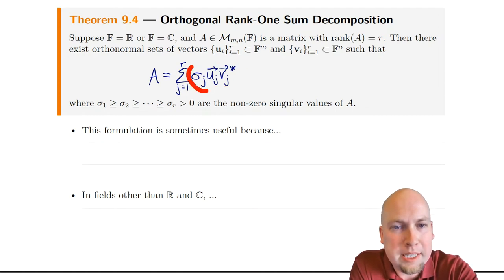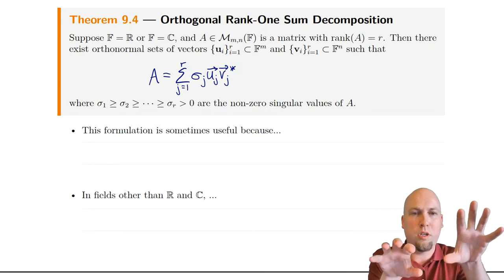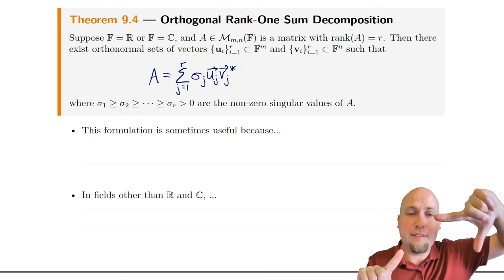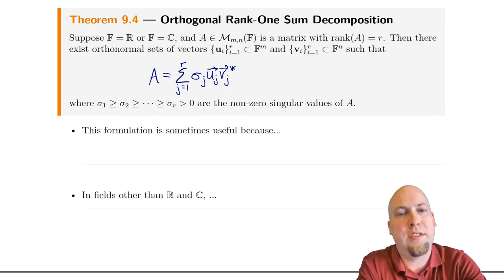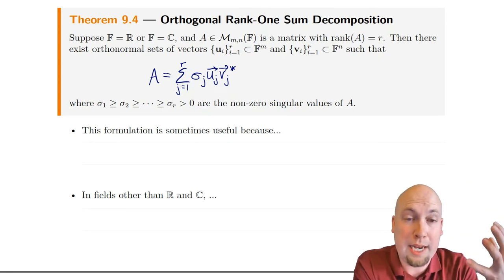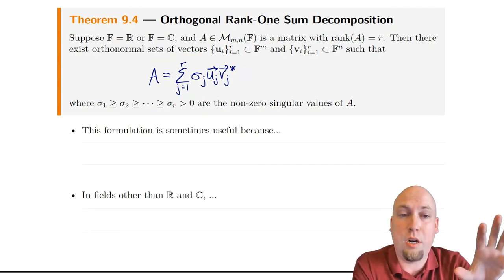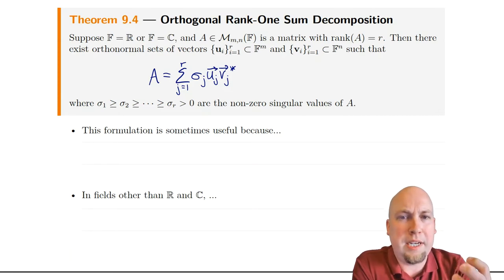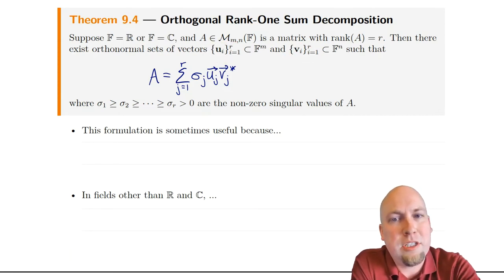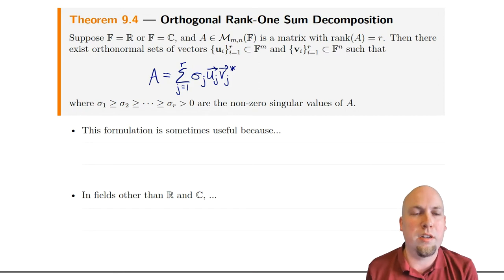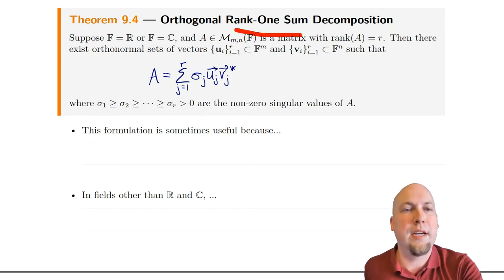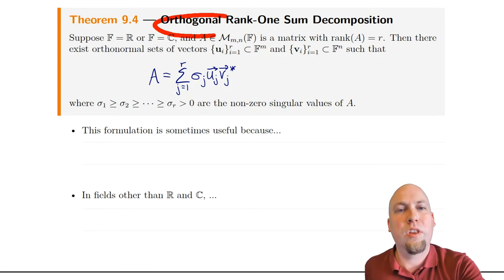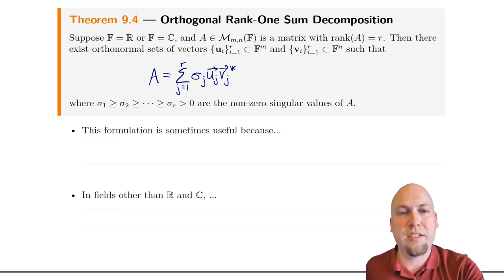These matrices — this is a scalar, this is a column vector, and this is a row vector. Whenever you have a column vector times a row vector, that gives you a matrix, and in particular a rank-1 matrix. So this is a scalar multiple of a rank-1 matrix, which is still rank 1. I've written A as a sum of R rank-1 matrices. Furthermore, something even more special is happening: these aren't any old vectors — they're actually orthonormal sets of vectors. The u's are all orthogonal to each other, and the v's are all orthogonal to each other. So we call this an orthogonal rank-1 sum decomposition.